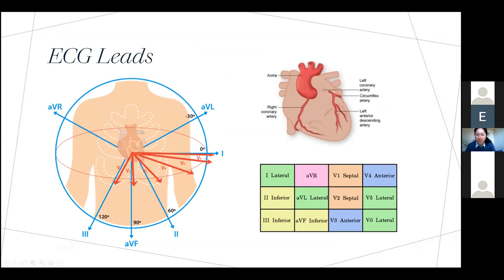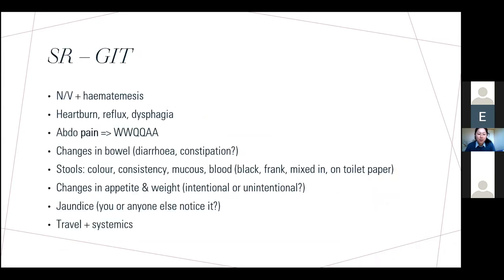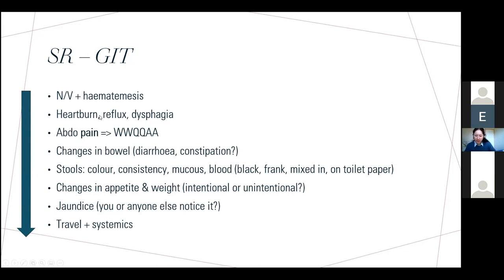There are three pictures that really help with ECG lead positioning: V5 and V6 are all the way on the edge, as are lead I and aVL — that's why these are all the lateral leads. The 3D picture really helps to understand this. Moving on to GIT: I've organized the systems review top-down, starting from nausea and vomiting, going down to heartburn, abdominal pain, and then the more systemic stuff.